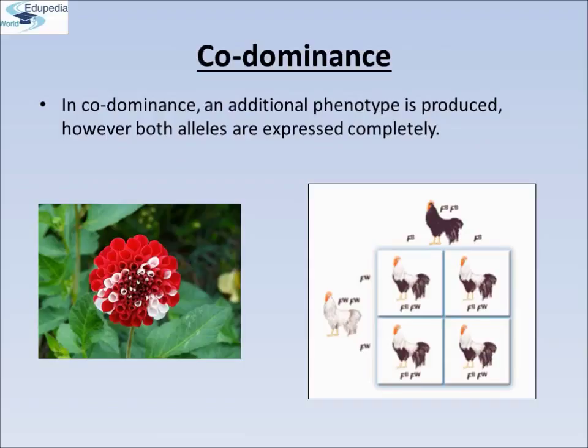Codominance. Till now we were discussing about crosses where the F1 resembled either of the two parents — that is dominance — or was in between, that is incomplete dominance. But in the case of codominance, the F1 generation resembles both parents. In codominance, an additional phenotype is produced; however, both the alleles are expressed completely. For example, heterozygous chickens have both black and white feathers, and heterozygous flowers have both red and white petals.